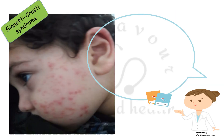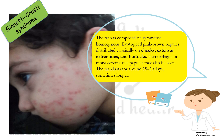Gianotti-Crosti syndrome, also referred to as papular acrodermatitis of childhood, affects children between 1 to 6 years of age. Viruses implicated include hepatitis B, Epstein-Barr virus, CMV, and Coxsackie virus. The rash is composed of symmetric, homogenous, flat-topped pink-brown papules distributed classically on the cheeks, extensor extremities, and buttocks. Hemorrhagic or moist eczematous papules may also be seen. The rash generally lasts 15 to 20 days or sometimes longer, so parents should be counseled accordingly.